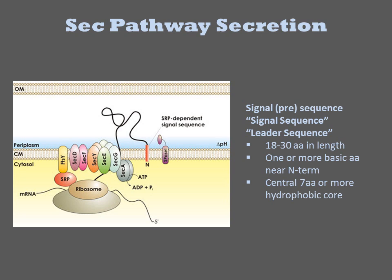To target a protein to the inner membrane or the periplasm, one puts a pre-sequence on the N-terminus of it. These sequences are typically 18 to 30 amino acids in length and encode one or more basic residues near the N-terminus and a 7-amino acid hydrophobic core. The pre-sequence is also called a signal sequence or a leader sequence. It is recognized by a set of sec proteins that associate with the ribosome and actively transport the protein through the membrane.